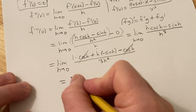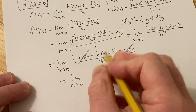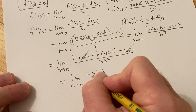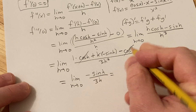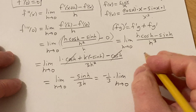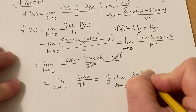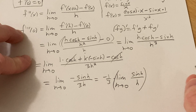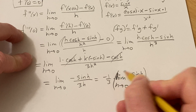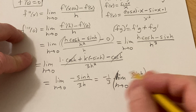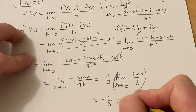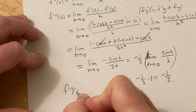This equals the limit as h approaches zero. One of the h's cancels, and we get negative sine h over 3h. Pulling out negative one-third, this becomes negative one-third times sine h over h. That is a special limit — sine h over h approaches one as h approaches zero. So it's negative one-third times one, giving negative one-third. That is the second derivative at zero.